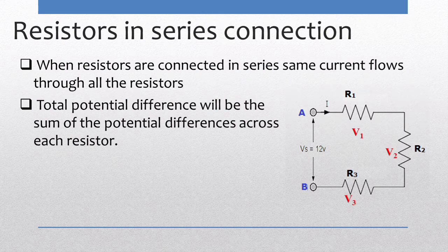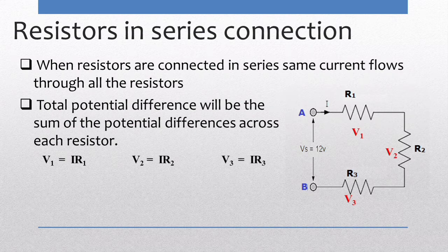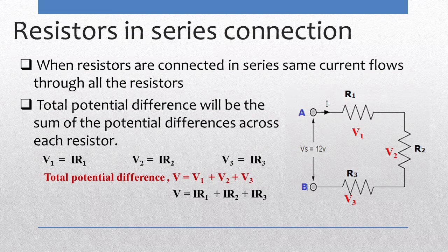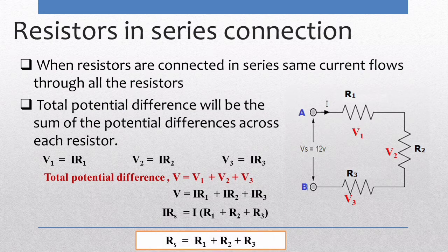According to Ohm's law, V = IR. So the potential difference V1 across R1 is IR1, V2 across R2 is IR2, and V3 across R3 is IR3. The total potential difference V equals V1 + V2 + V3, which gives V = IR1 + IR2 + IR3. Since V = I·Rs where Rs is the equivalent series resistance, we get Rs = R1 + R2 + R3.